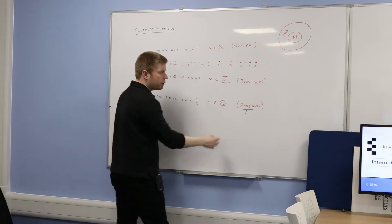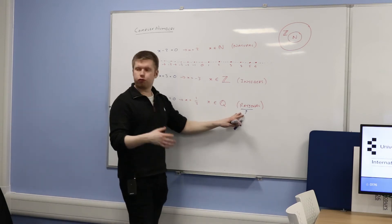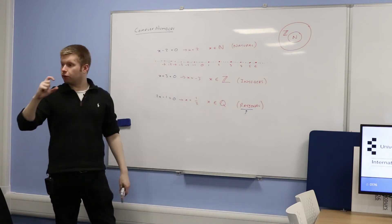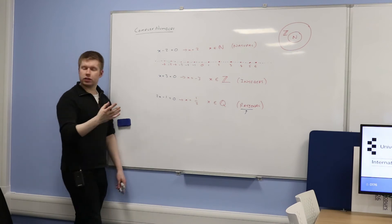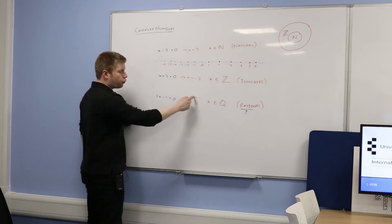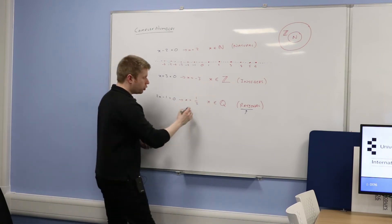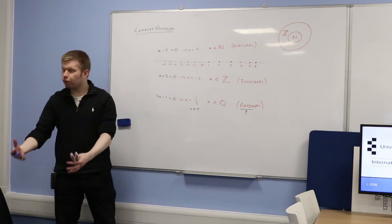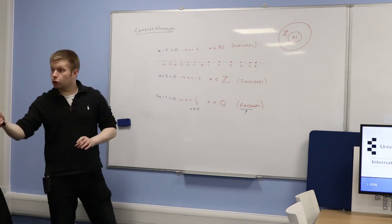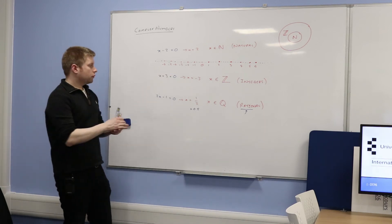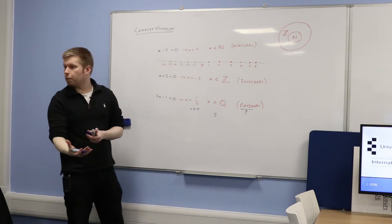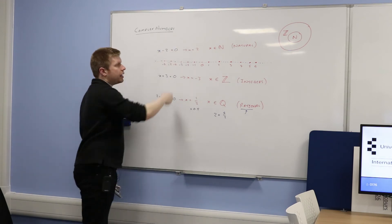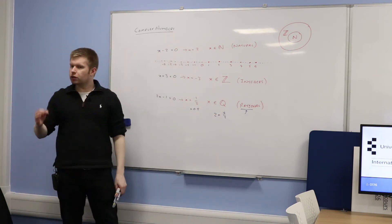Part of that belief was that all numbers could be written as a ratio — what happens when you divide two numbers by each other. Pythagoras and his followers literally believed every single number could be written as a ratio of two integers. For example, half — which you could write as 0.5 — is rational because it can be written as 1 over 2, or 2 over 4, etc. Even 2 is rational because it can be written as 4 over 2.